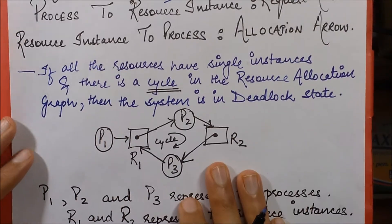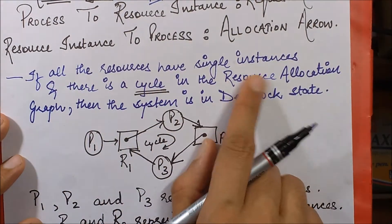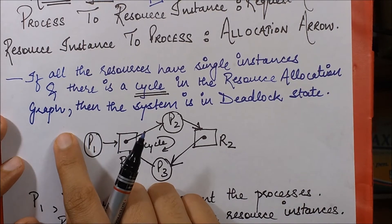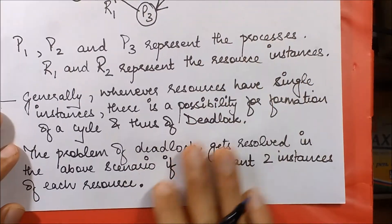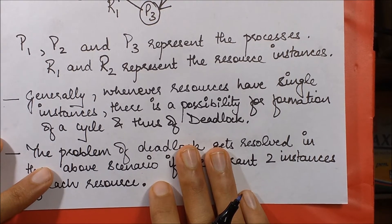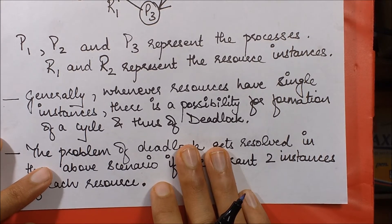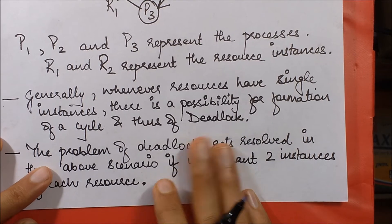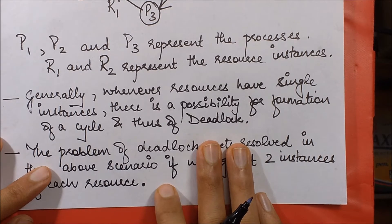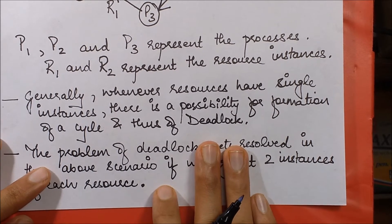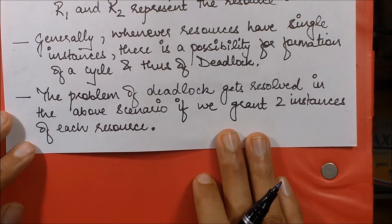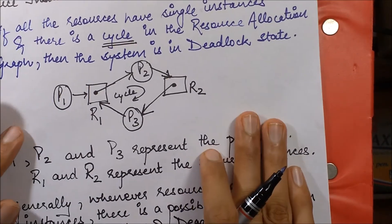If all resources have single instances and there is a cycle in the resource allocation graph, then the system is in a deadlock state. Whenever resources have single instances, there is a possibility for formation of a cycle and thus of deadlock. This deadlock problem in the above scenario gets resolved if we grant two instances of each resource — let's see how.